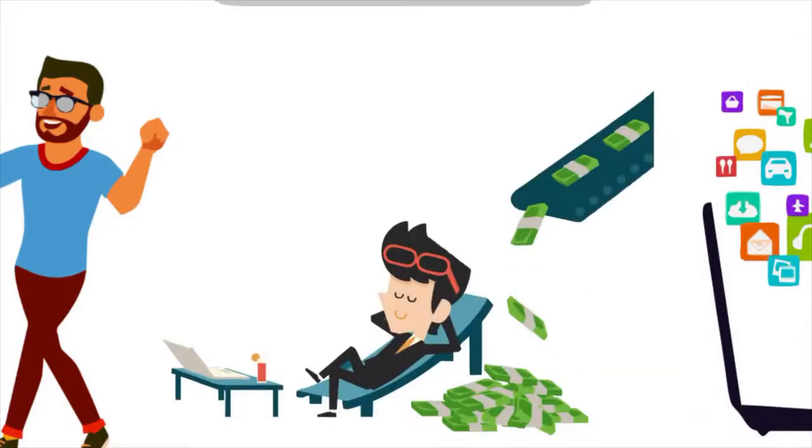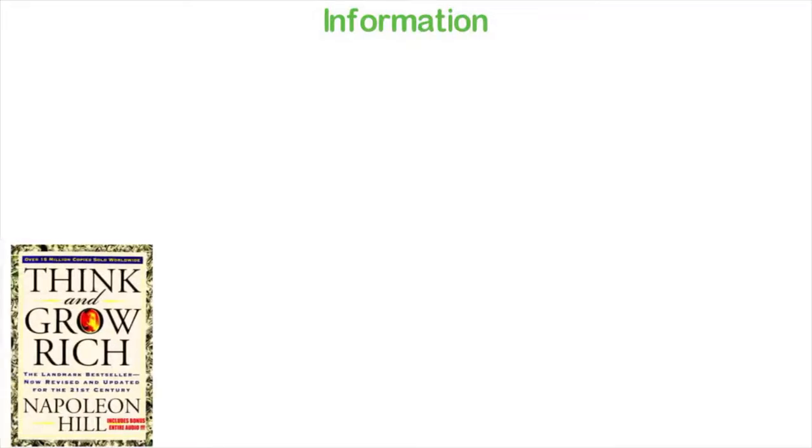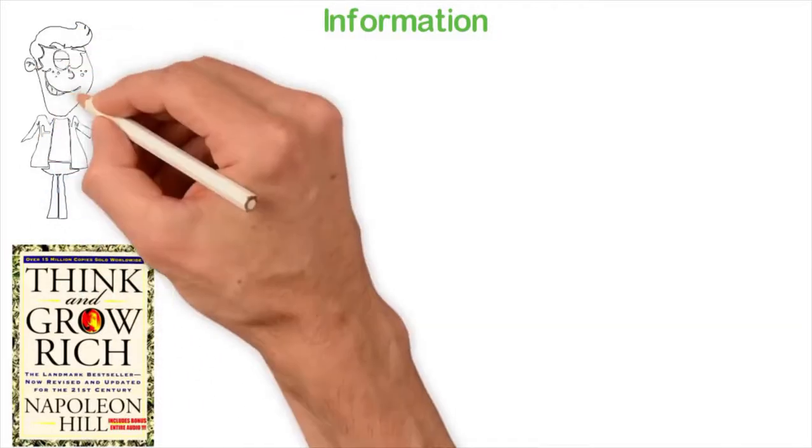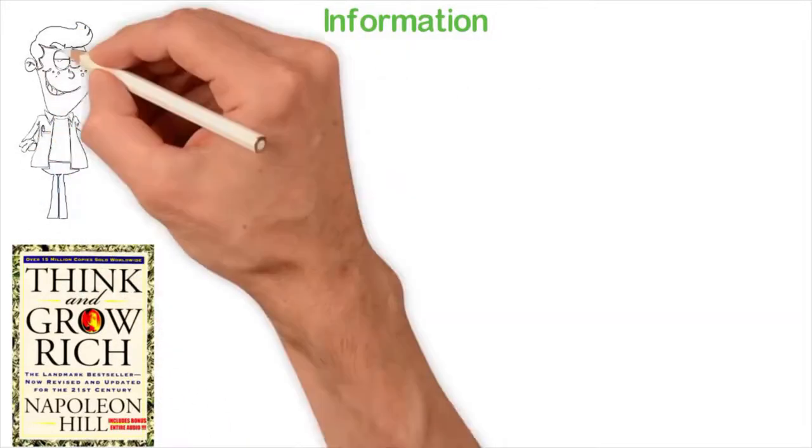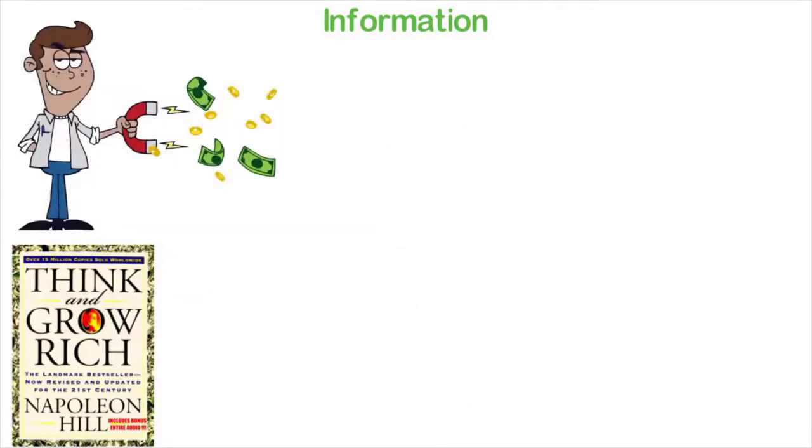Maybe that's even complex for some people to understand. Look at something simpler, information. In the year 1937, Napoleon Hill published a book called Think and Grow Rich. Any book is just paper and ink, but this book has sold 33 million copies and is still making money today, more than 80 years after it was published.